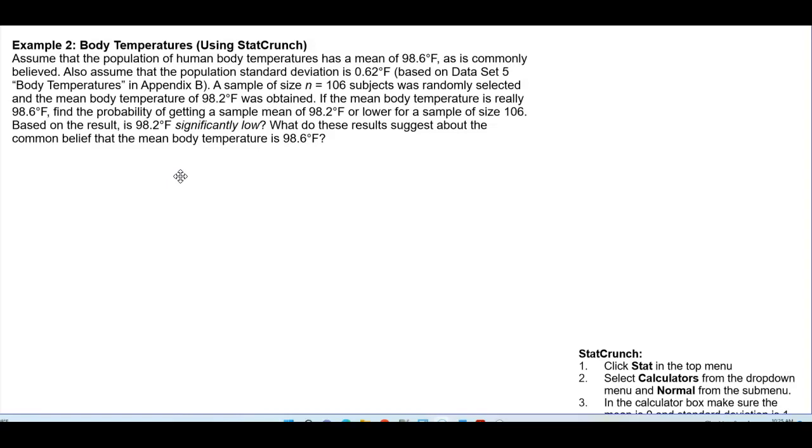Also assume that the population standard deviation is 0.62 degrees Fahrenheit based on data set 5 body temperatures in Appendix B. A sample of size n equals 106 subjects was randomly selected and the mean body temperature of 98.2 degrees Fahrenheit was obtained.